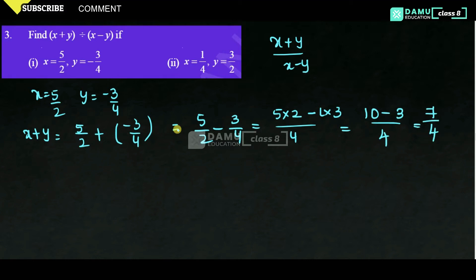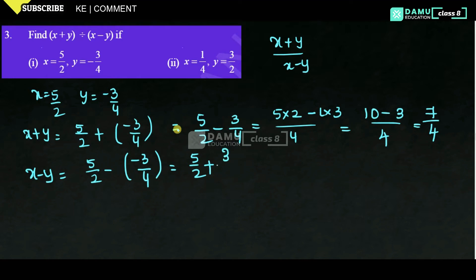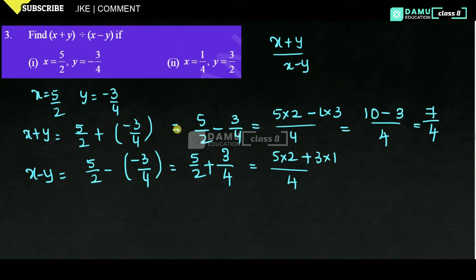So 7 by 4 is the answer for x plus y. Next, x minus y means 5 by 2 minus of minus 3 by 4, that will be equal to 5 by 2 plus 3 by 4, since minus into minus becomes plus. LCM is 4.